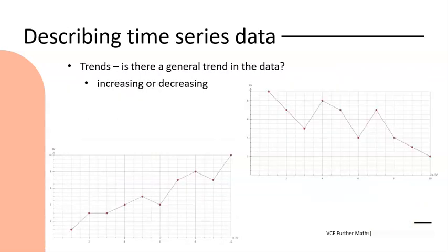So once we have some time series data and we've constructed a plot for that, what we're wanting to do is to describe any trends that we are seeing. A little bit different to scatter plots what we've done previously. We've got a few new words in our vocabulary here when we're describing. So the first one is trend. Do we see a general trend in the data? Is it generally increasing or decreasing over time?